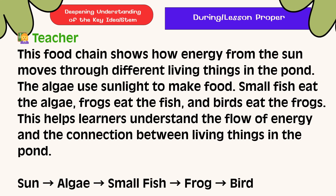This food chain shows how energy from the sun moves through different living things in the pond. The algae use sunlight to make food, small fish eat the algae, frogs eat the fish, and birds eat the frogs. This helps learners understand the flow of energy and the connection between living things in the pond.